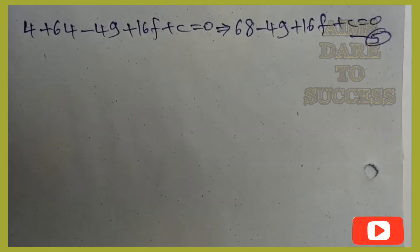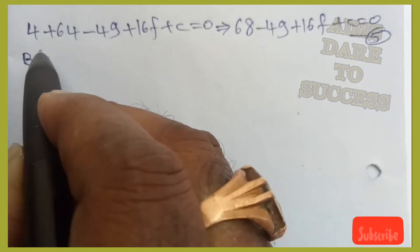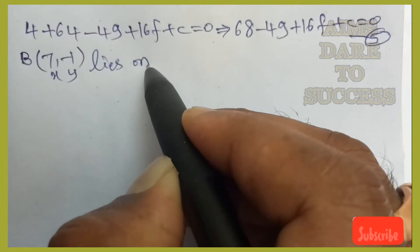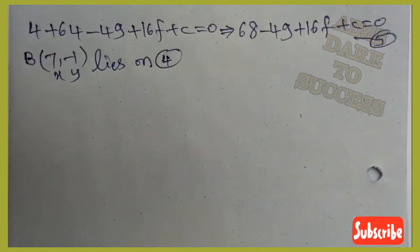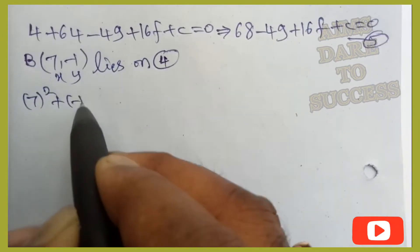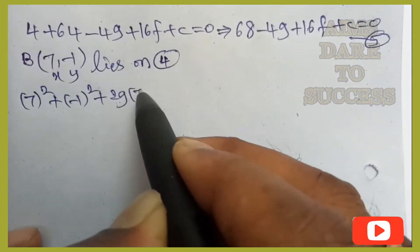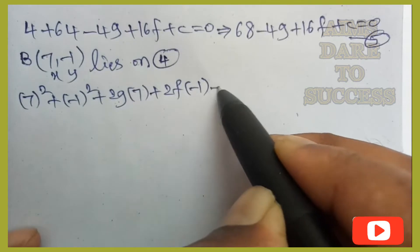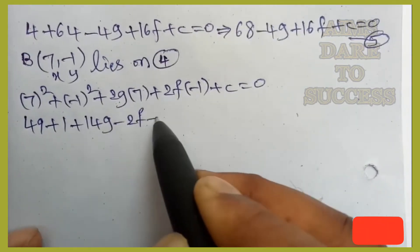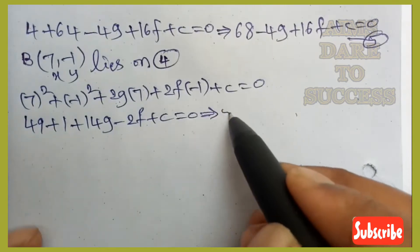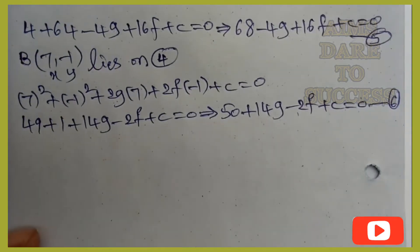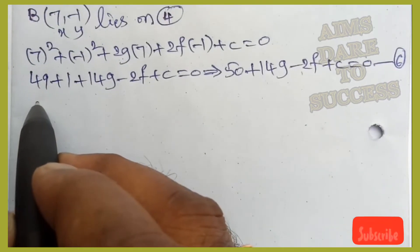Substituting point B(7,−1) into equation 4: 7²+(−1)²+2g(7)+2f(−1)+c=0, giving 49+1+14g−2f+c=0, so 50+14g−2f+c=0 (equation 6).